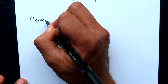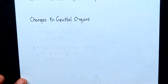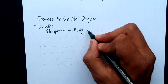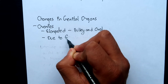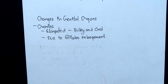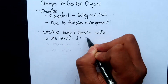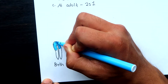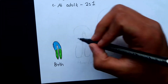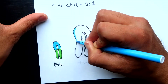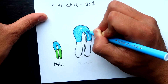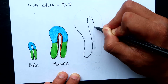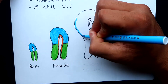Let's look at some changes in the genital organs. The elongated shape of the ovaries becomes bulky and oval due to follicular enlargement at various stages of development. The uterine body to cervix ratio at birth is about 1:2. The ratio becomes 1:1 when menarche occurs. Thereafter, the enlargement of the body occurs rapidly so that the ratio soon becomes 2:1.